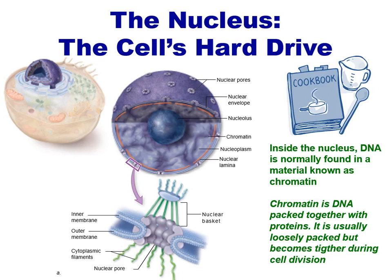If the nucleus is like the master cookbook, then if any particular protein needs to be made, a copy of that recipe or that gene must be made, and it must actually be exported or leave the nucleus. This is done through the use of specialized pores or openings in the nuclear envelope or nuclear membrane known as a nuclear pore.